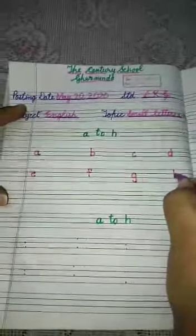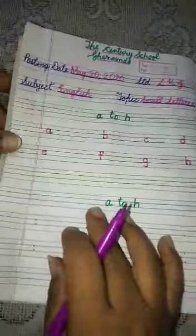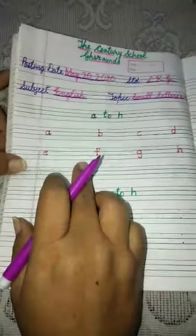Up and this is G. Straight line, then up to down, H. This is A to H. Again, we will write one more time.